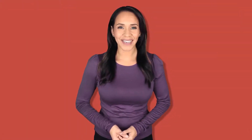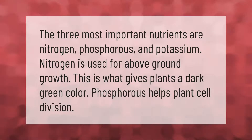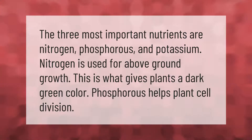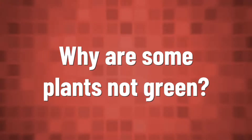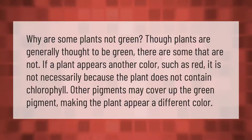The three most important nutrients are nitrogen, phosphorus, and potassium. Nitrogen is used for above-ground growth and is what gives plants a dark green color. Phosphorus helps plant cell division.